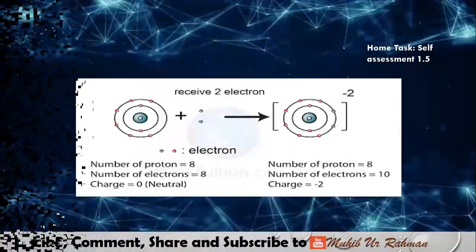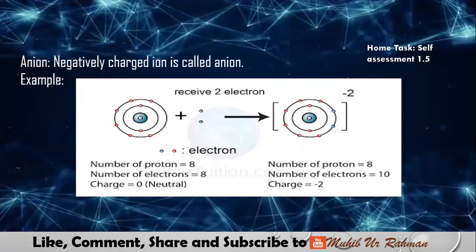Anions are negatively charged ions. Let's suppose oxygen: initially in the nucleus there are eight protons (positive charge) and eight negatively charged electrons. When equal, it's balanced and neutral. But when two electrons are gained, the proton number stays the same in the nucleus, but electrons increase. Total charge becomes minus two because two negatively charged electrons were added. This negatively charged species is called an anion.